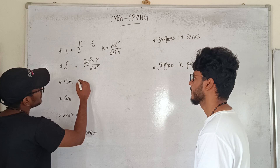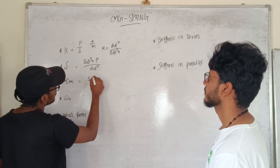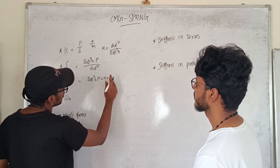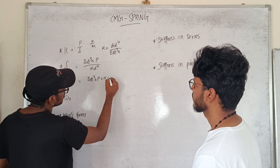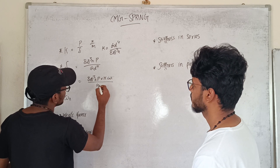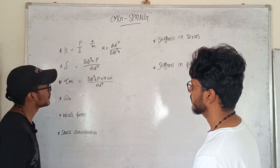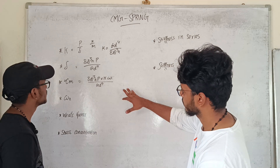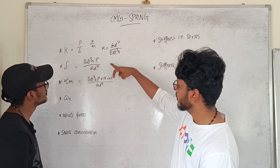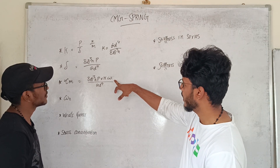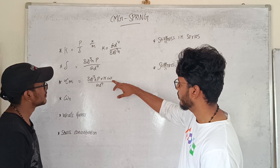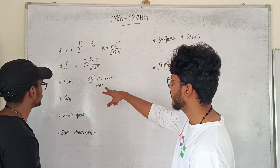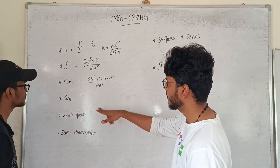The CSS formula is: 8D cubed times N times load times K times omega, divided by G times D power 4. Deflection equals K times omega quotient.